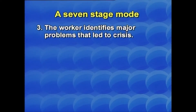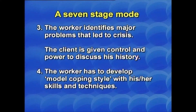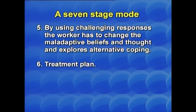The worker identifies major problems that led to the crisis. The client is given control and power to discuss his or her own history. The worker develops a model coping style with appropriate skills and techniques. By using challenging responses, the worker changes maladaptive beliefs and thoughts and explores alternative coping. Treatment plan and follow-up are then established.